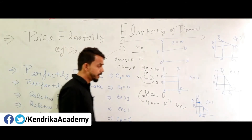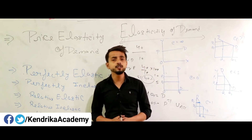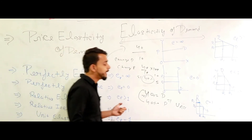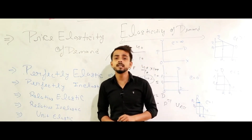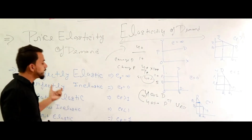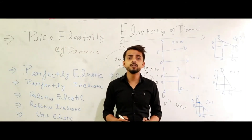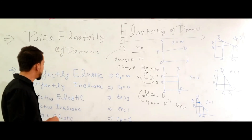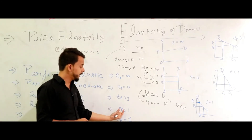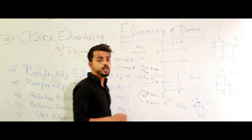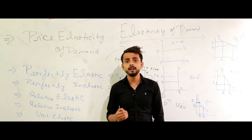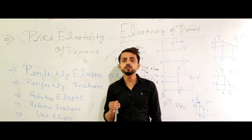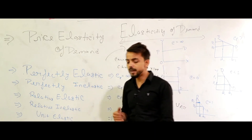Why is price elasticity of demand important? We can measure the response of demand in comparison to price — when it is zero, when it is greater than one, when it is less than one, when it is infinite. It is very important in a practical field to understand how price responds to demand. If the change in price is greater than demand, that is relatively inelastic demand (ep less than one). If change in price equals change in demand, it is unit elastic (ep equals one).